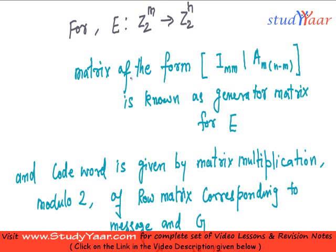So for such kind of encoding function, a matrix of the form identity m into m and A into m into n-m. This is a matrix, any given matrix of the order m into n-m. And over here we have the identity matrix. Then such a matrix is known as generator matrix for this encoding function.